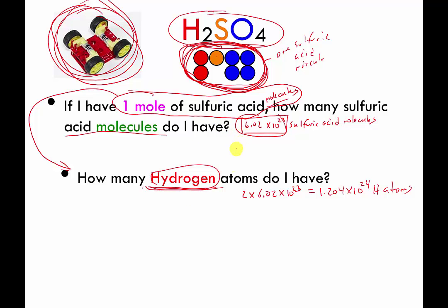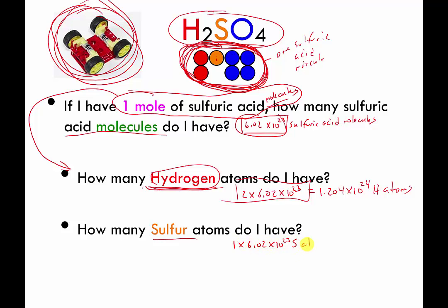If I have this many sulfuric acids, how many hydrogens do I have? Well, there's two hydrogens inside of every one sulfuric acid, so I have to have twice as much. How many sulfur atoms do I have? You can pause and answer that, but again, it's going to be pretty straightforward. If you crack open a sulfuric acid molecule, there's one sulfur inside of every sulfuric acid molecule, so it's going to be 1 times 6.02 times 10 to the 23 sulfur atoms. But 1 times any number is just going to be the original number, so it's 6.02 times 10 to the 23 sulfur atoms.